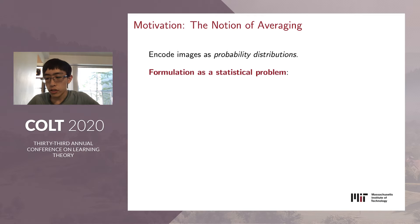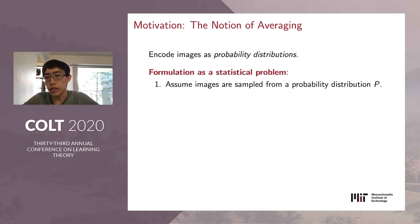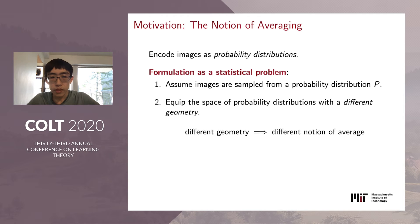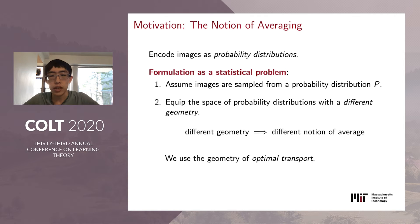In this images problem, we can encode each image as a probability distribution, and we formulate it as a statistical problem by assuming that the images are sampled from a probability distribution p. Because the images themselves are probability distributions, p is a probability distribution over the space of probability distributions. We then equip the space of probability distributions with a new geometry—different from the usual L2 geometry—and this new geometry gives us a new notion of average. In particular, the geometry we're going to use is the geometry of optimal transport.